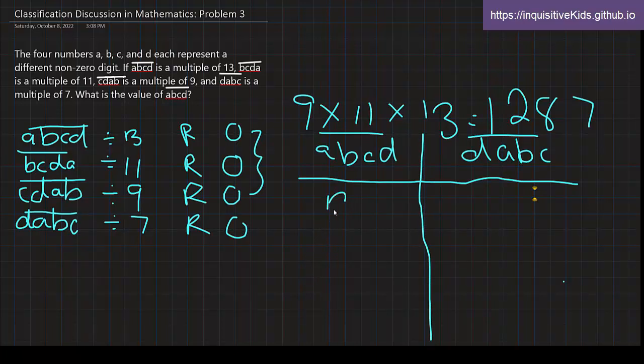Remember, DABC has to be a multiple of 7, while ABCD has to be a multiple of 1,287. So this is equal to the first multiple of 1,287. So that does not work, because this is not a multiple of 7.